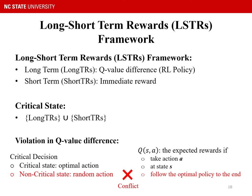To summarize, in our long-short-term rewards framework, the long-term rewards is the Q value difference from the RL policy, and the short-term rewards is the immediate reward. We identify one set of critical states using long-term rewards, and another set using short-term rewards. The final critical states are the union of the two sets. On critical states, the agent should take the optimal action; on non-critical states, the agent can take any action. However, the Q value difference is calculated based on the assumption that the agent will carry out the optimal policy to the end, so by not taking optimal actions on non-critical states, we violate the Q value assumptions in the Bellman equation. Therefore, we need to modify the Bellman equation.